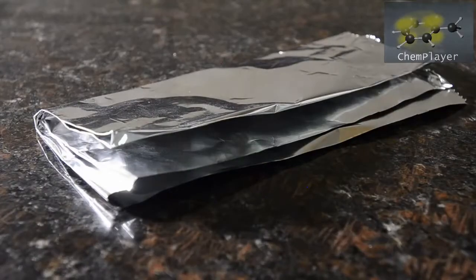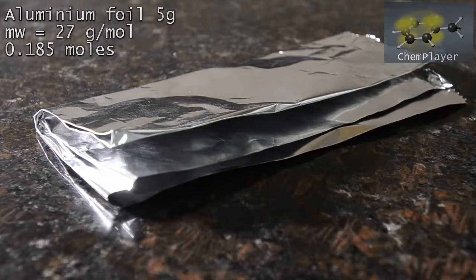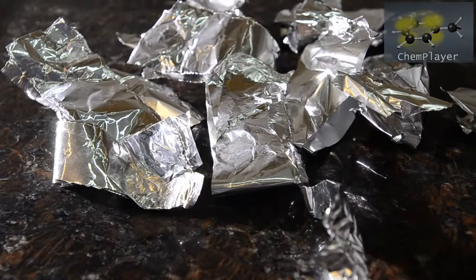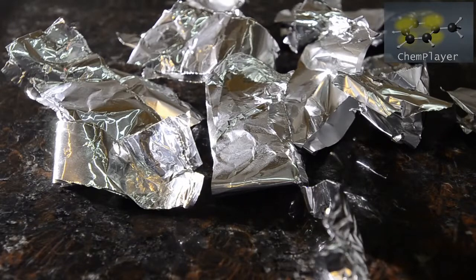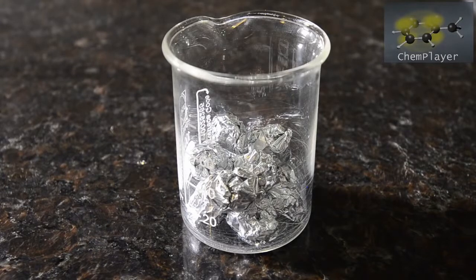Now for our aluminum foil, we've got a layered sheet here which weighs 5 grams. This should be an excess given that one atom of aluminum should react with three atoms of iodine. We cut it into strips and then rolled them into little balls so we can easily add to the reaction mixture.